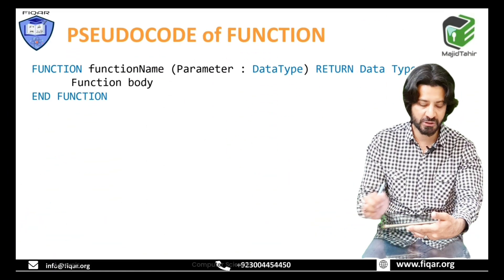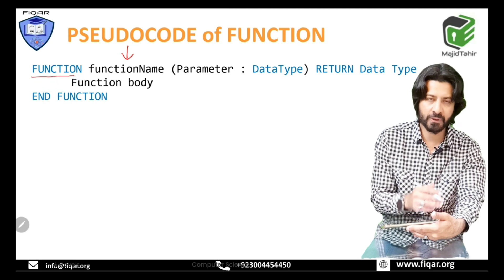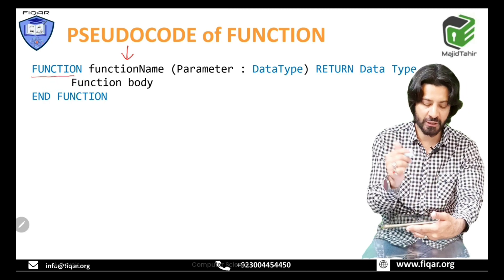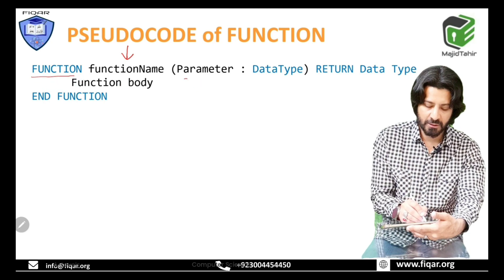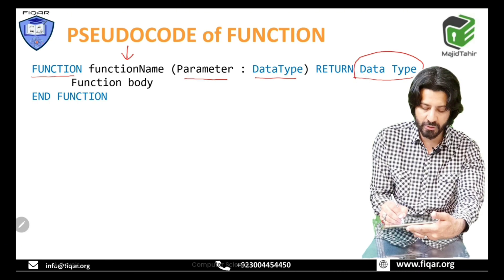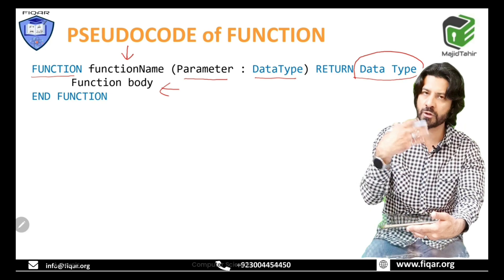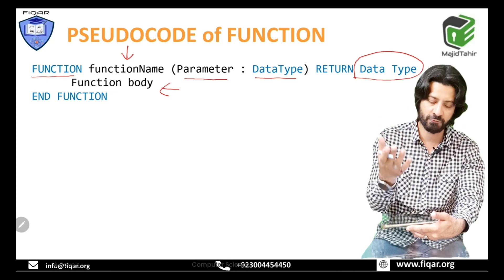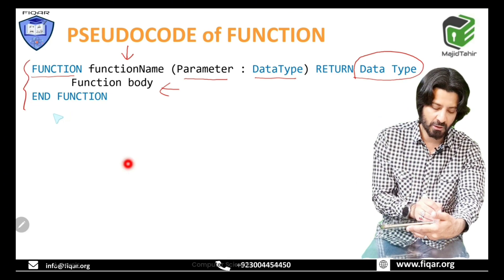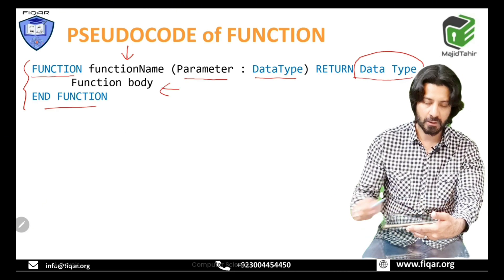The pseudocode for a function uses the 'function' keyword, followed by the name of the function, its parameter, the parameter's data type, and then the return data type — whatever data type the function will return is written here. Then comes the function body, and the block ends with the 'end function' keyword.